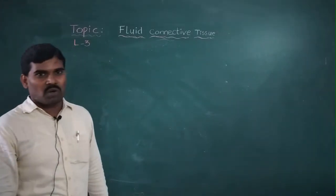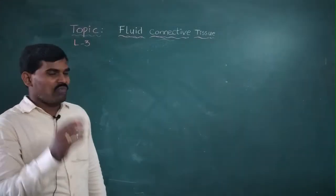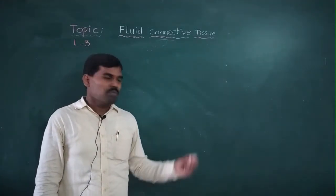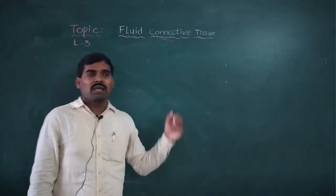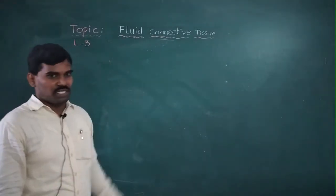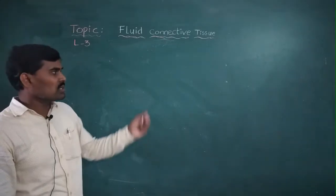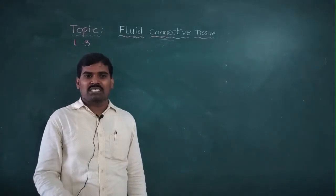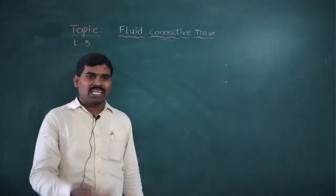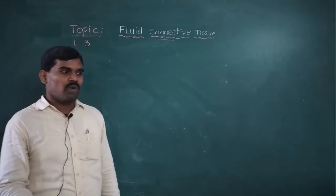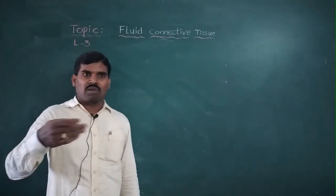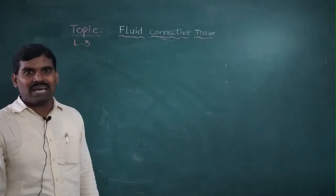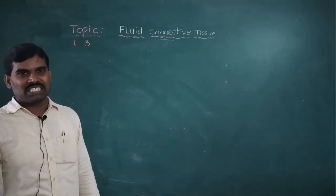Monocytes have a kidney-shaped nucleus and make up 5.3% of the total WBCs. Monocytes are involved in antibody collection, increasing immunity power and resistance power in our bodies.